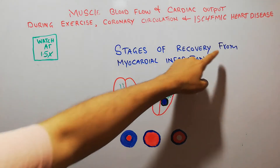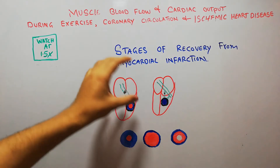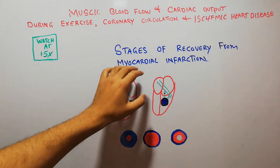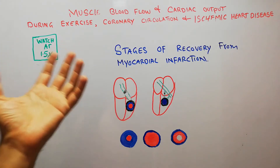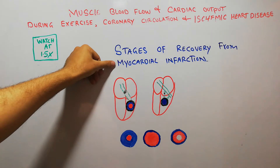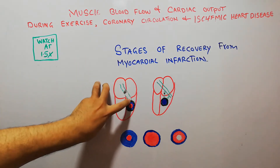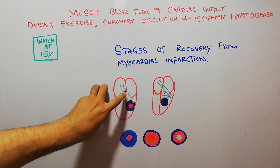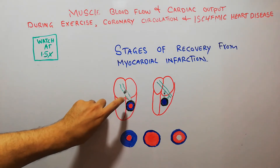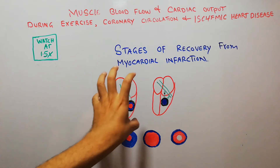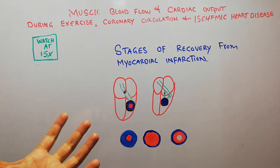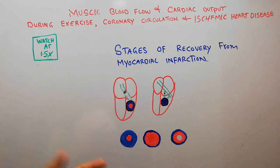Today we are going to discuss stages of recovery from myocardial infarction, or how the heart muscle recovers after myocardial infarction, acute coronary occlusion, or heart attack. Basically, myocardial infarction is the occlusion of a coronary vessel, due to which blood flow to a specific area of the heart is decreased or stopped, leading to decreased functioning of the heart muscle and possibly sudden death or death from cardiac shock, acute pulmonary edema, rupture of the cardiac muscle, or ventricular fibrillation.